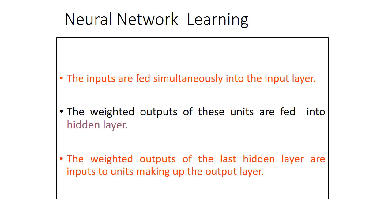In neural network learning, inputs are fed simultaneously into the input layer, and the weighted outputs of these units are fed into the hidden layer. There are three important layers: the input layer which takes the inputs, the output layer which produces the output, and in between them one or more hidden layers. The weighted output of the last hidden layer becomes the input to the output layer.